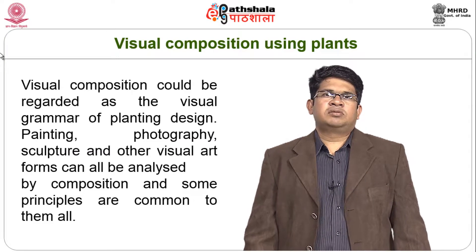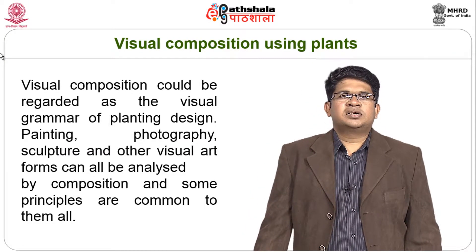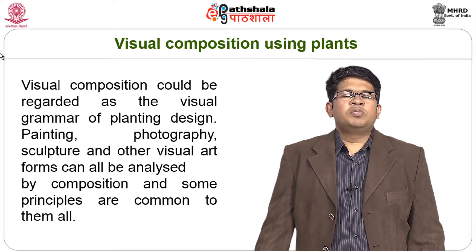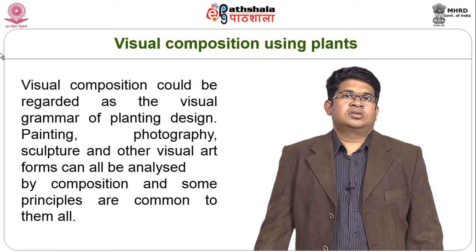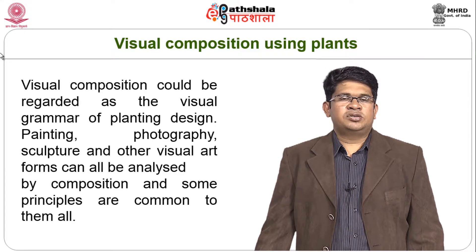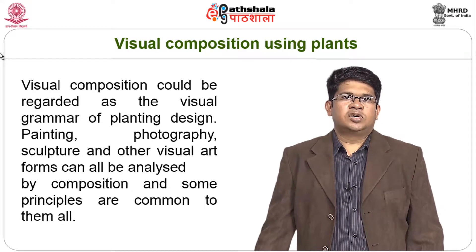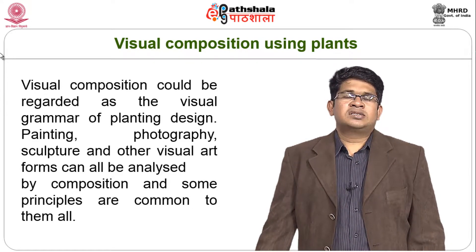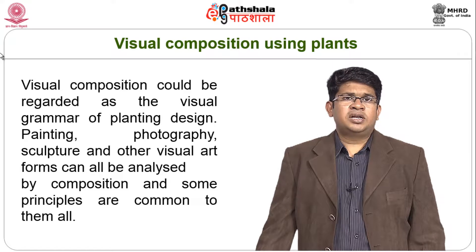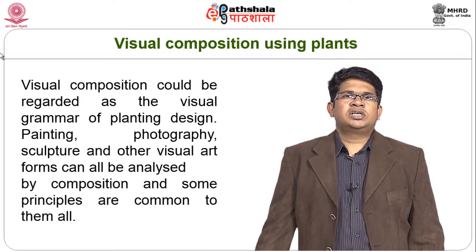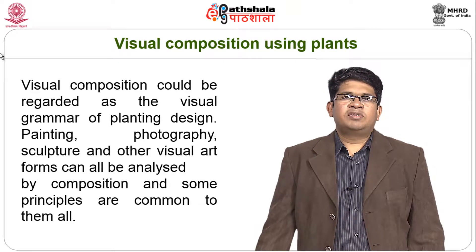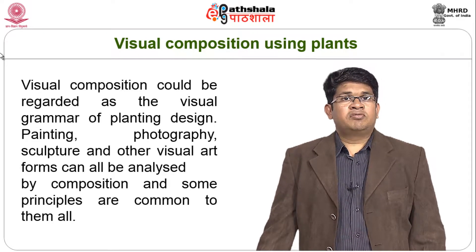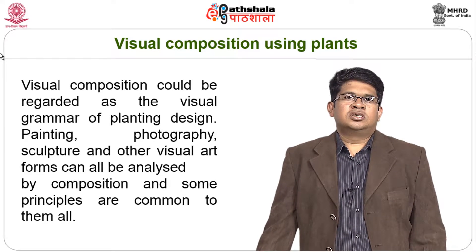Visual composition using plants could be regarded as the visual grammar of planting design. How do we design using plants? How do we arrange plants with respect to the designed visual — where to place a plant, how to place it, what comes in front, what comes at the back, the components of foreground and background, contrasting colors, contrasting textures. There are a lot of different plant materials, each with their own unique structure, growth habits, and flowering habits, so they differ in a lot of ways.